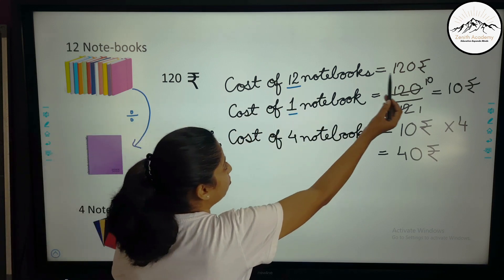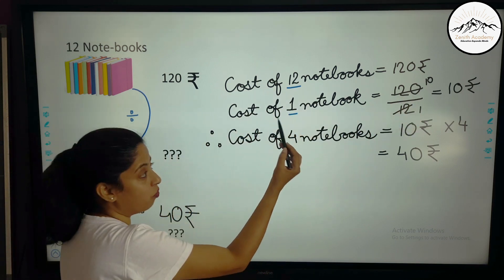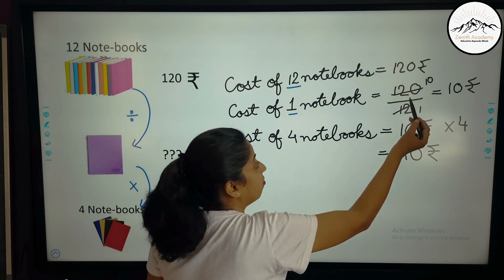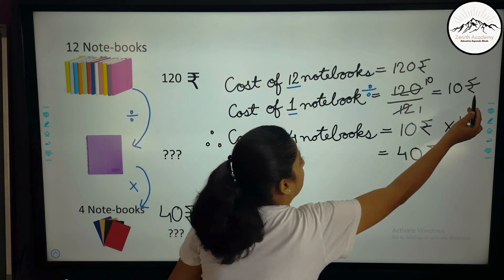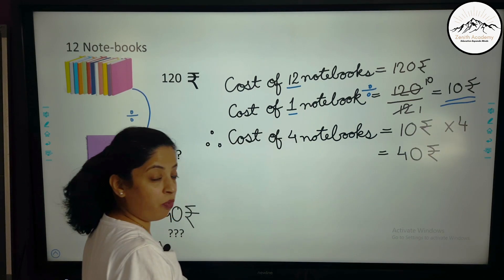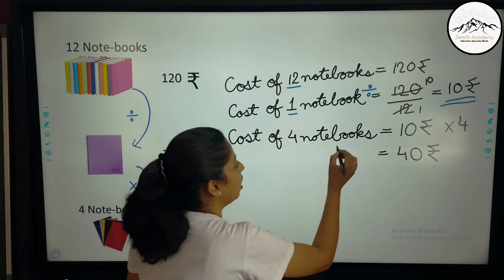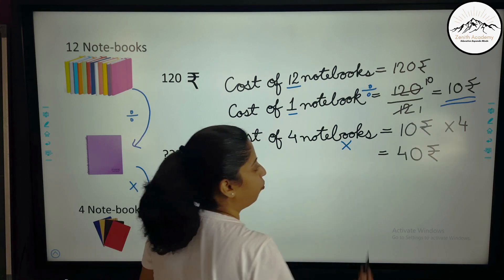And then from 1 to more number of books, we have to multiply. So cost of 12 notebooks was 120, therefore cost of 1 notebook will be 120 divided by 12. So here we have done division. And then we got the cost of 1 notebook. Now we want cost of 4 notebooks, so we will multiply. 10 into 4.